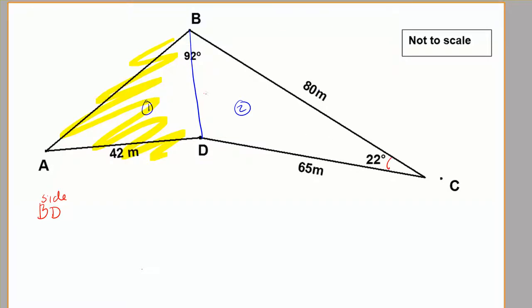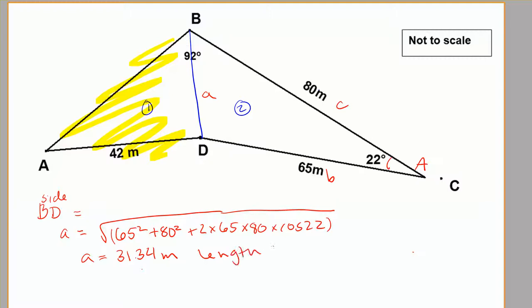So I'm going to label this side little a, because I always label my unknown a, and that's a side. That means this is going to be big A, and then I have b and c to work with. Using my cosine rule, I know that a is going to be equal to the square root of 65 squared plus 80 squared plus 2 times 65 times 80 times cosine of 22, and all of that's going to be square rooted. And you get your final answer here, you're going to get 31.34 meters, and that is for length BD.